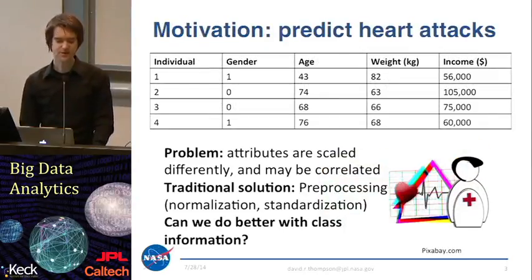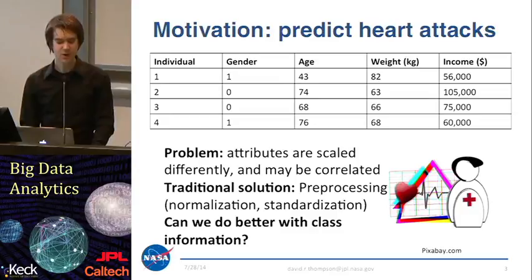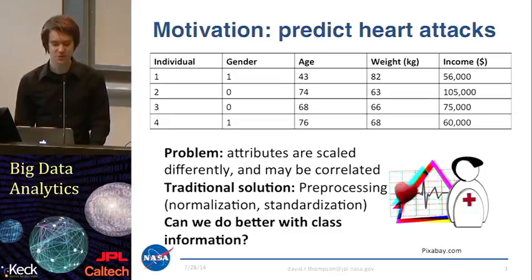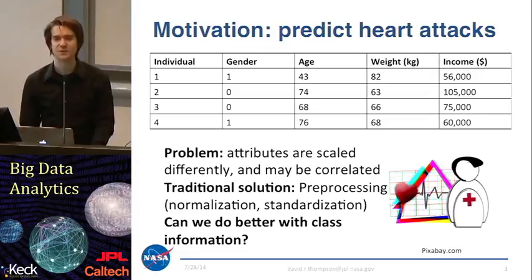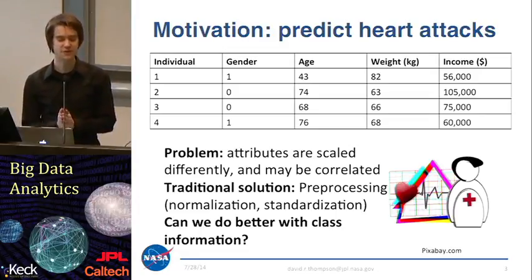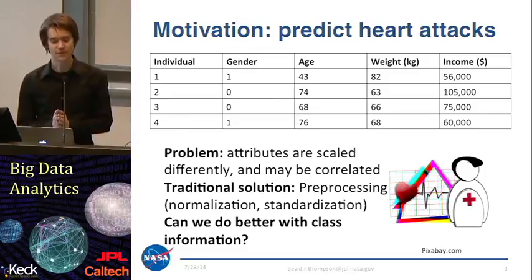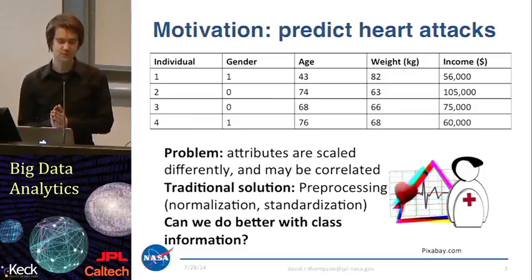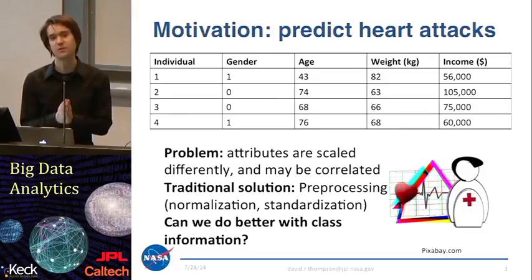Here's a simple example to motivate why we might be interested in learning distance metrics, and it involves predicting heart attacks. We have a table of attributes for different individuals with different numerical attributes. We've encoded gender as either 0 or 1, included the age as well, the individual's weight, which might be relevant to whether they're going to have a heart attack or not, and also their income, which might or might not be relevant.